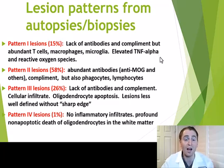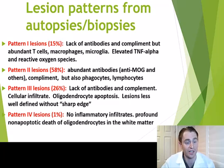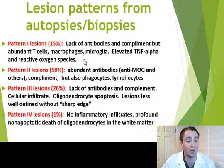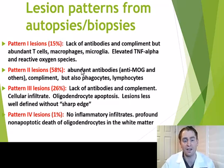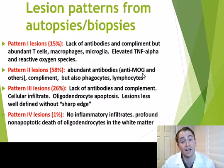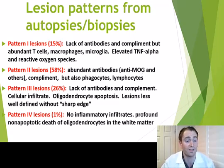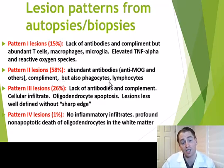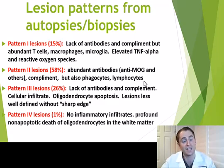The most common is pattern 2 lesions, 58%, where we see all types of inflammation — abundant antibodies targeting various antigens such as anti-MOG, or myelin oligodendrocyte glycoprotein. MS is a polyantigenic disease, not just targeting one component of myelin. There is also complement — proteins that work with antibodies — and various types of cells: phagocytes like microglia and macrophages, and lymphocytes, the B and T cells. So that's the most common mixed inflammatory picture.